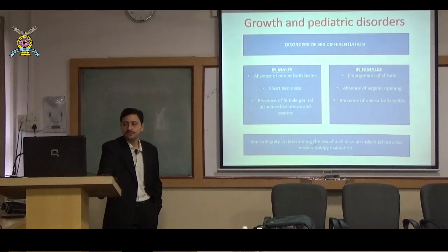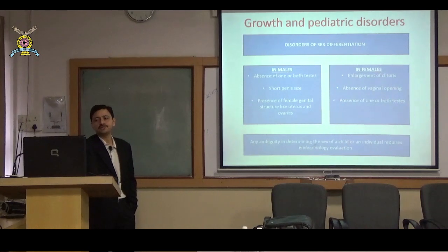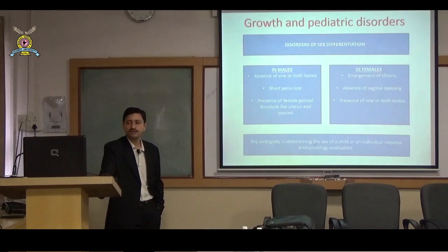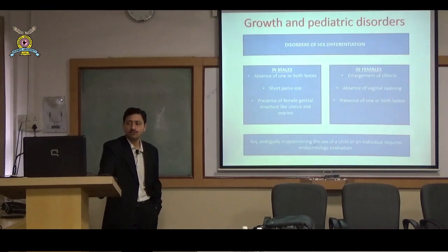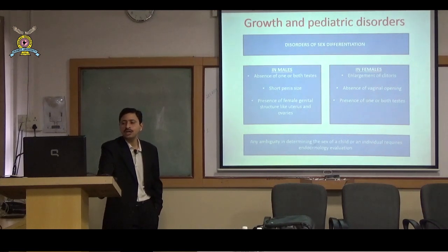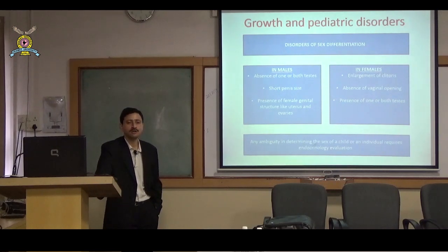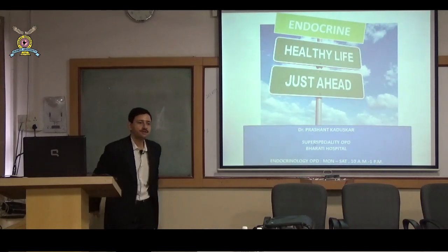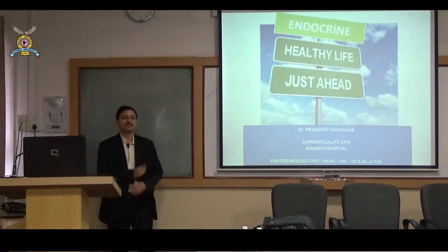Disorders of sex differentiation — which may appear at birth or later — are immediately a case for the pediatrician to refer. In males: absence of one or both testes, small penile size, presence of female genital structures like uterus or ovaries. In females: enlargement of clitoris, absence of vaginal opening, presence of one or both testes. Any ambiguity in determining the sex of a child or individual requires endocrinology evaluation. Thank you — I am available daily from 10 to 1 for any questions.